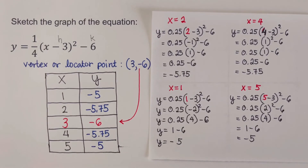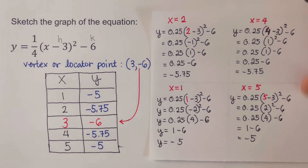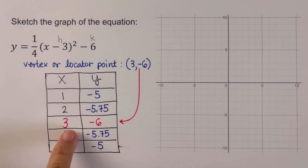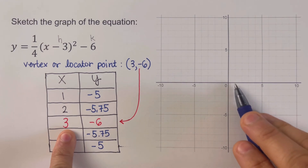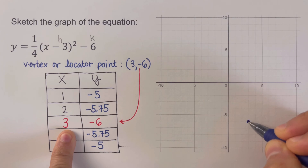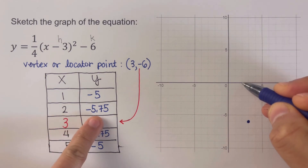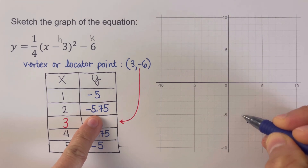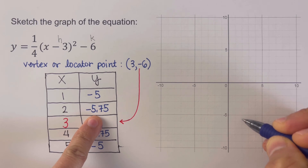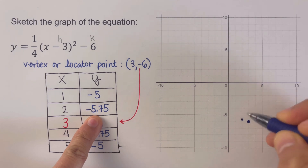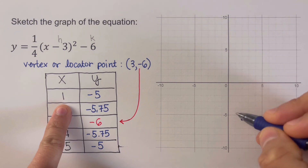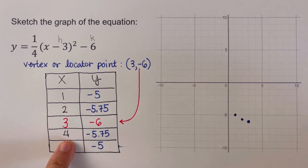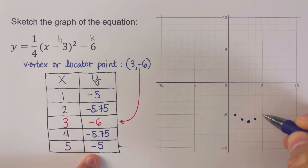With the completed table, the third step is to sketch the graph. Starting with the vertex at (3, −6), then (2, −5.75) — just slightly above the −6 line — then (1, −5), then on the other side (4, −5.75) and (5, −5). Connecting these points gives us the parabola for this equation.